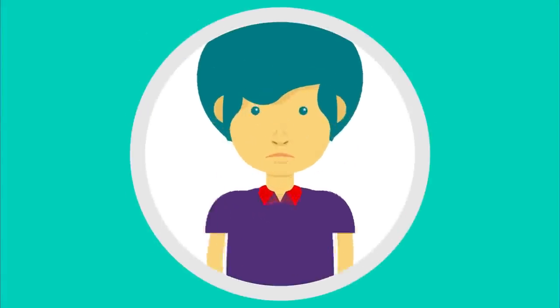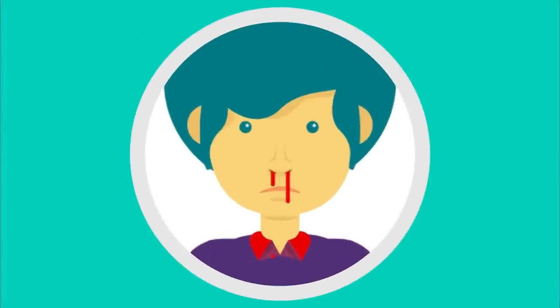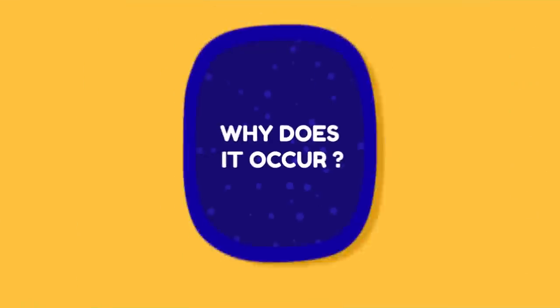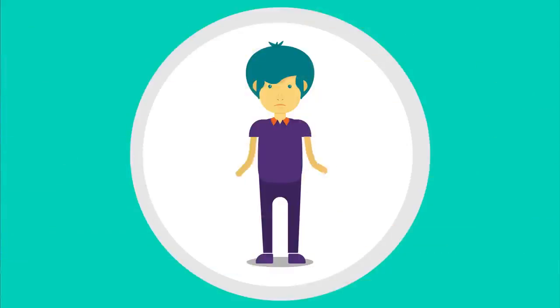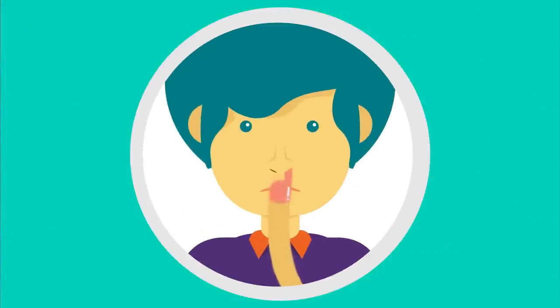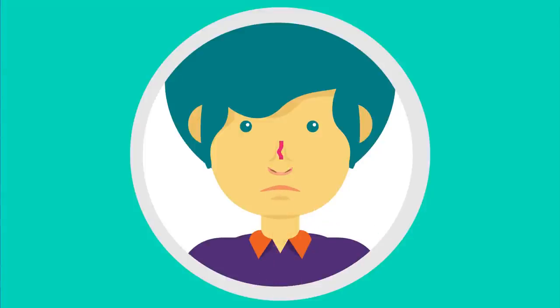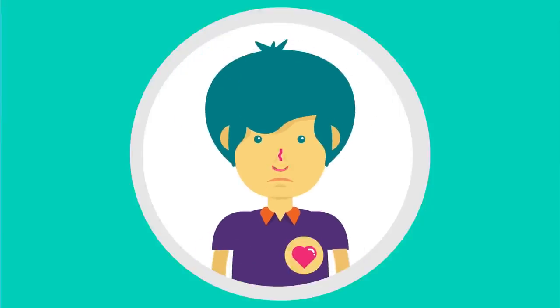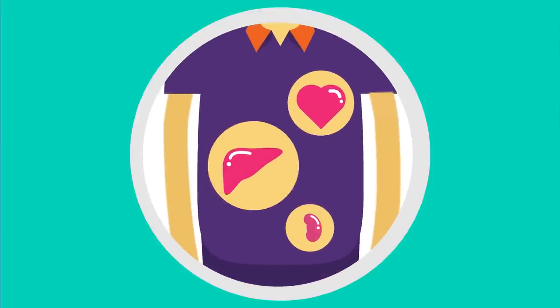Epistaxis: bleeding from inside the nose is also known as epistaxis. Important causes include, in children, trauma due to nasal picking and foreign body in the nose. Other causes include infections of the nose, deviated nasal septum, raised blood pressure, kidney disease, and liver disease.